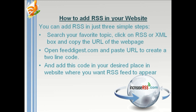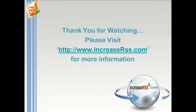How to add RSS to your website in three simple steps: search your favorite topic, click on the RSS or XML box and copy the URL of the webpage. Then open feeddigest.com and paste the URL to create a two-line code. Add this code to the desired place on your website where you want the RSS feeds to appear.